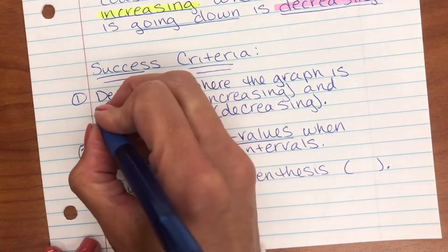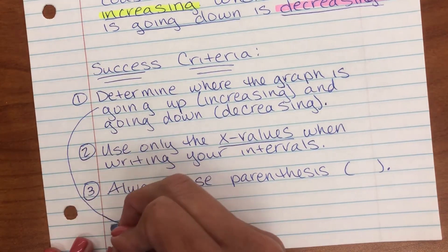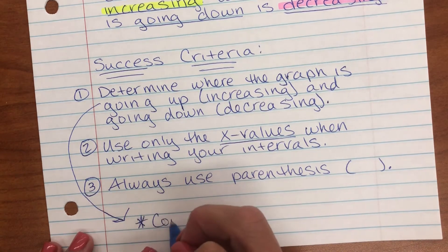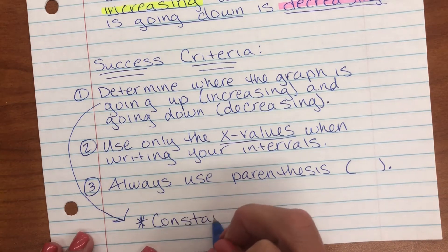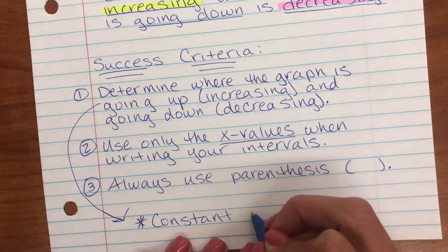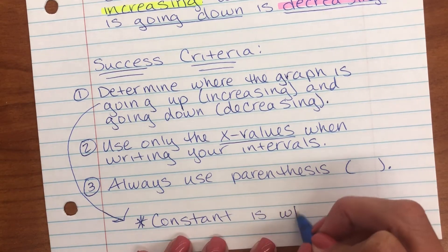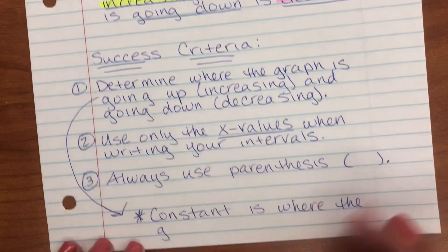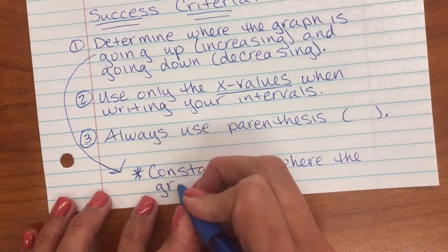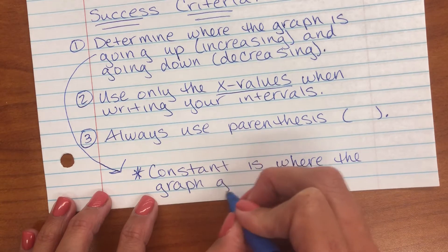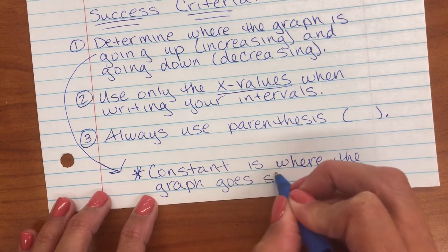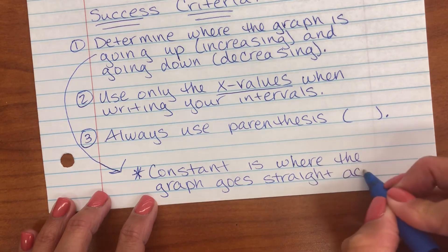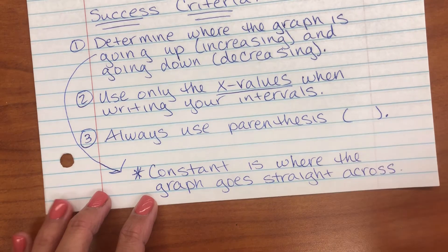Let's make a note about constant here. You have this in your success criteria. This little side note. Constant. A constant interval is where the graph goes straight across.